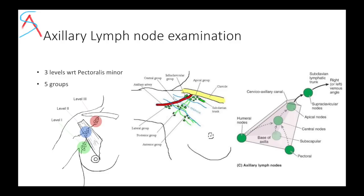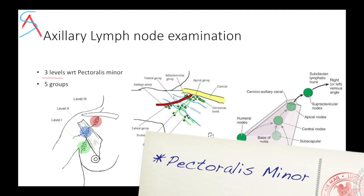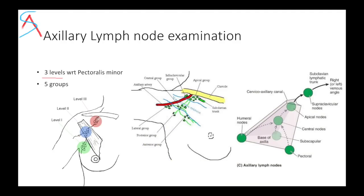In axillary lymph node examination, understand there are three levels with respect to pectoralis minor. The lymph node level medial to pectoralis minor is level 3, behind pectoralis minor is level 2, and lateral to it is level 1. Level 1 has three groups: anterior, posterior, and lateral. Level 2 has only the central group, and level 3 has the apical group. All of these drain into the subclavian lymphatic trunk.